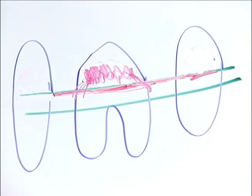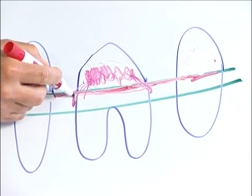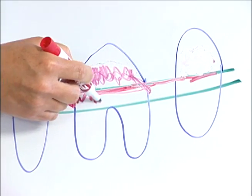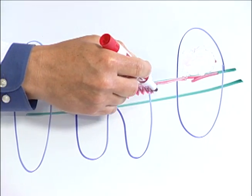Periodontal disease is inflammation to the deeper supporting structures of the teeth. And now we're seeing this inflammation down here along these teeth.